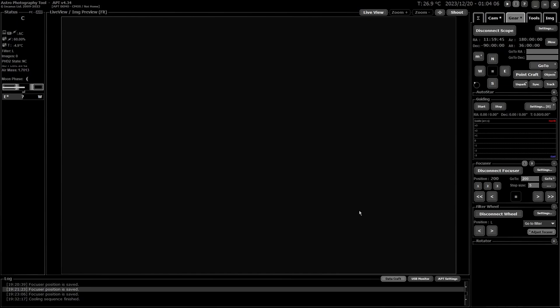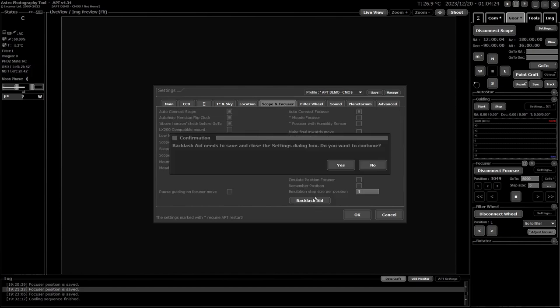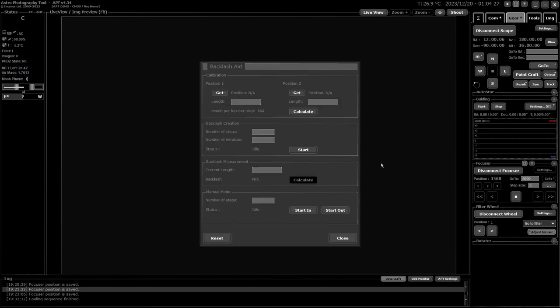So in APT the first thing you're going to want to do is move your focuser to the first position, which I used 5,000. While that's doing that I'll go over to the settings, which in the latest version you can get to down here, go to scope and focuser and click on backlash aid. So just wait for your focuser to get to 5,000 or whatever you've chosen. That's about one third of the distance my focuser can travel. Then you get the position and as you see it'll fill it in with that position.